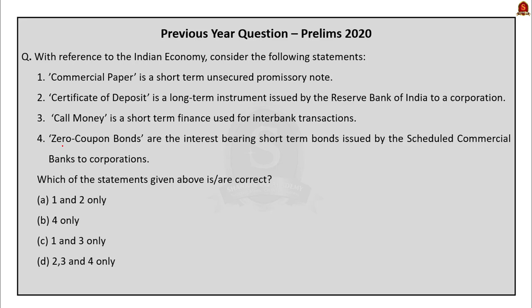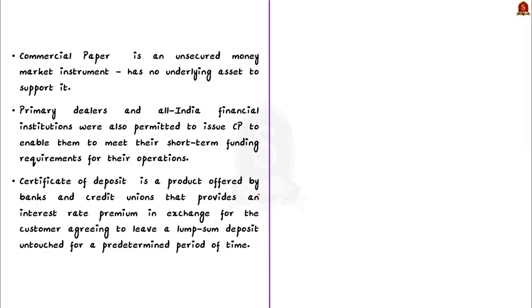With reference to the Indian economy, consider statements about commercial papers, certificate of deposit, call money, and zero coupons. The correct option is C. Commercial paper is an unsecured money market instrument — it has no underlying asset — issued in the form of a promissory note. It was introduced in India in 1990 to enable highly rated corporate borrowers to diversify their sources of borrowing and provide an additional investment instrument.